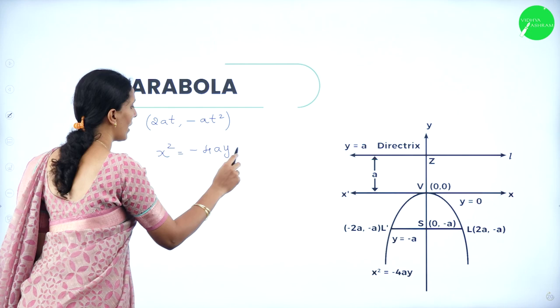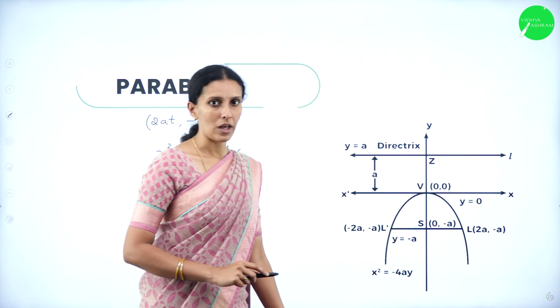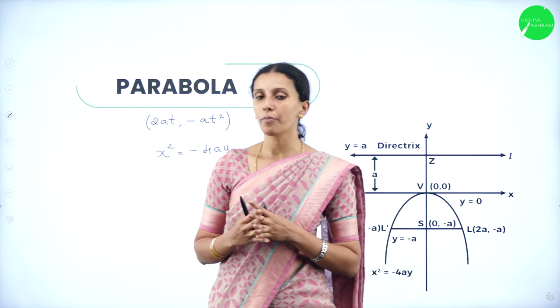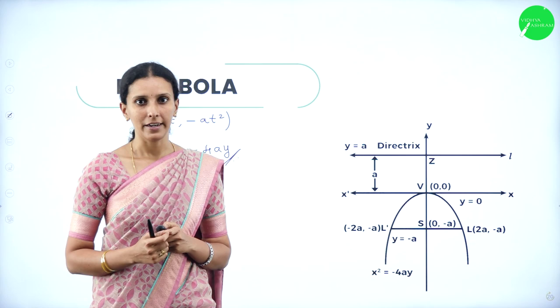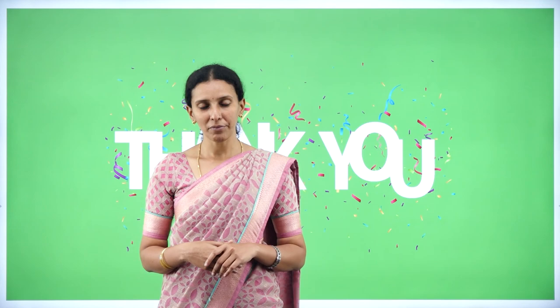It is very important to note all the characteristics of the four types of parabola — upward, downward, right-handed, and left-handed. In the next session, we'll study how to frame the equation of a parabola from given conditions, or find characteristics when the equation is given. Keep watching, keep learning, and keep exploring. Thank you.